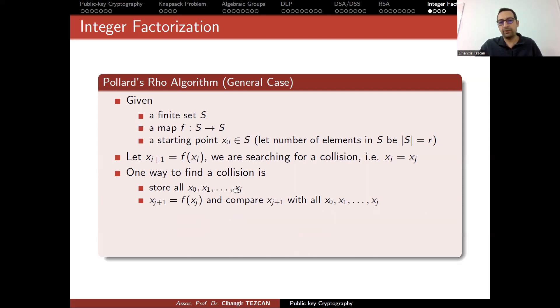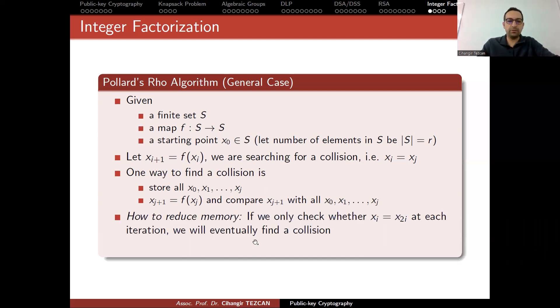But since we are storing all of these values, this is a memory intensive algorithm. If you want to find a hash collision like this, you have to store a lot of values. For instance, for SHA-1, you have to store at least 2^80 values like this.